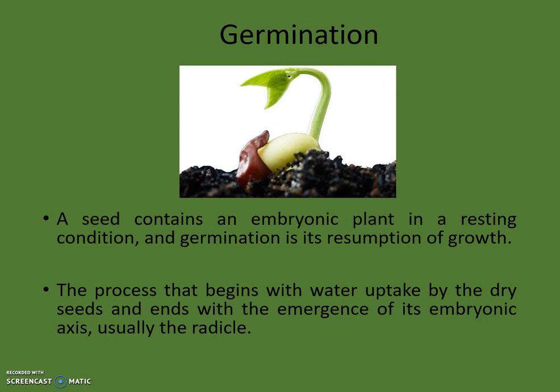We know that a seed contains an embryonic plant in an inactive state, and all the viable seeds which have overcome dormancy either naturally or artificially will readily germinate under suitable environmental conditions. Such seeds which just wait for suitable environmental conditions to germinate are said to be quiescent — that is, a seed contains an embryonic plant in a resting condition. Germination is the resumption of growth, or we can define germination as the beginning or the process of development of a seed, or simply the emergence of a new plant from a seed. But in physiology, the term germination is defined as the process that begins with water uptake by the dry seeds and ends with the emergence of its embryonic axis, usually the radicle.